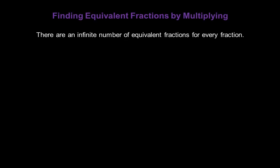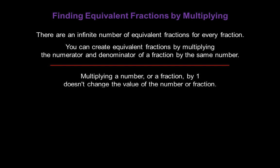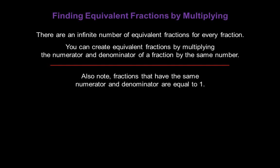Now there are an infinite number of equivalent fractions for every fraction. You can create equivalent fractions by multiplying the numerator and denominator of a fraction by the same number. Multiplying a number or a fraction by one doesn't change the value of that number or fraction. I'm sure you'd agree that 18 times one gives me 18, and if I multiplied one half by one I'd still get one half. Also note, fractions that have the same numerator and denominator are equal to one.